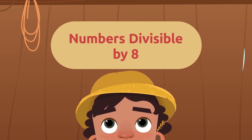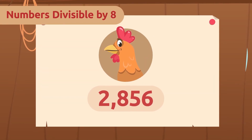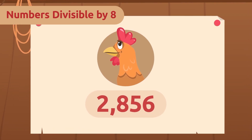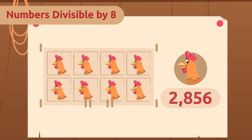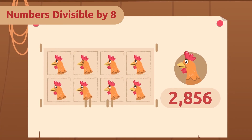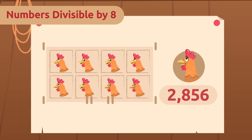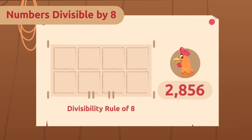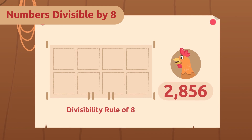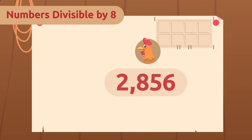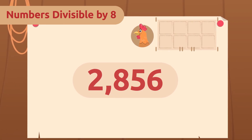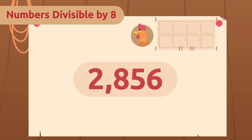Numbers divisible by eight. There are 2856 hens, and believe it or not, I know all of their names too! I'm going to build eight chicken coops — it's the perfect number for them to be comfortable. But I have the same question as before: will any chicken coop be incomplete? To get rid of any doubt, I will use the divisibility rule of eight. To find which numbers are divisible by eight, we look at their last three digits and see if they meet one of the two criteria.